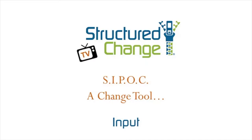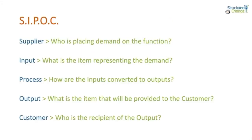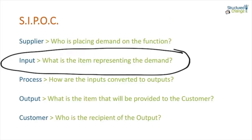The next letter we're going to consider in our SIPOC journey is the I for input. From the input perspective, we're asking: what is the actual item representing the demand? Is the supplier putting a request on us? Did they hand us a document? Is it a transaction in a system or a requisition? It's important to capture these different types of inputs because sometimes we get informal or unstructured inputs — a verbal request, an email, a document, or just someone calling and saying, "Can you do this?" — and all of a sudden the function begins taking on far more work than it initially intended to.